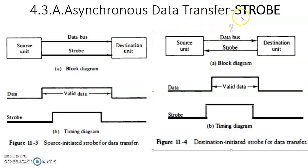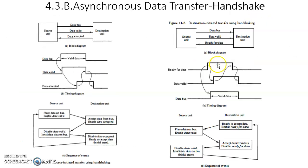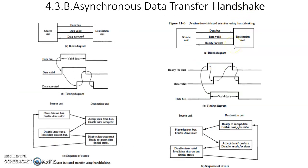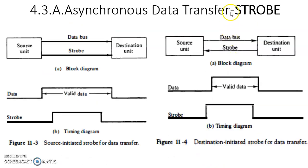Asynchronous data transfer can be executed in different ways. One way is strobe-controlled asynchronous data transfer, and another is handshake-controlled asynchronous data transfer. Let us look at strobe-controlled asynchronous data transfer. Strobe is the control signal required to establish synchronization between the source unit and destination unit.